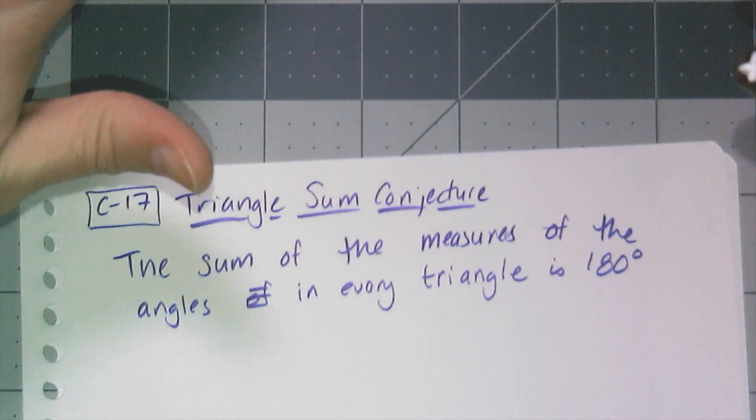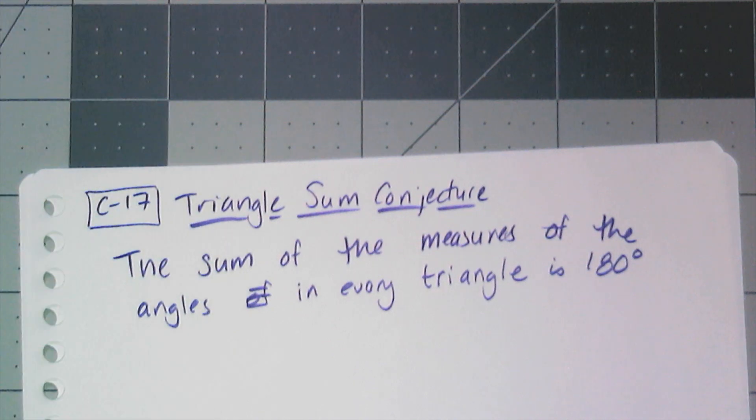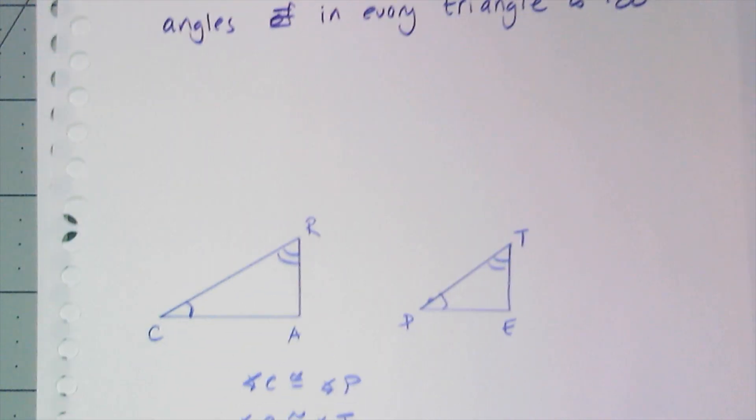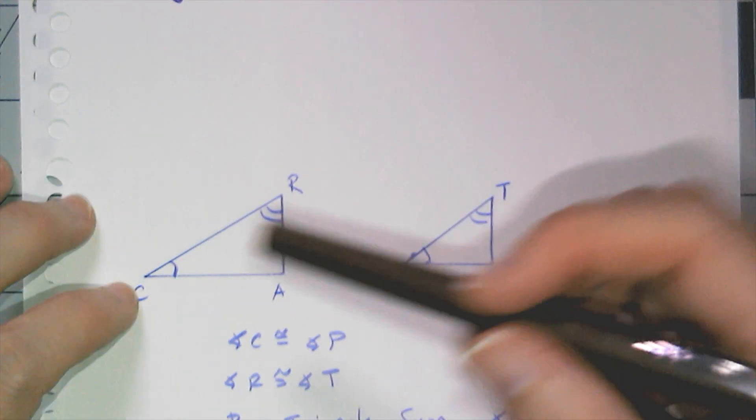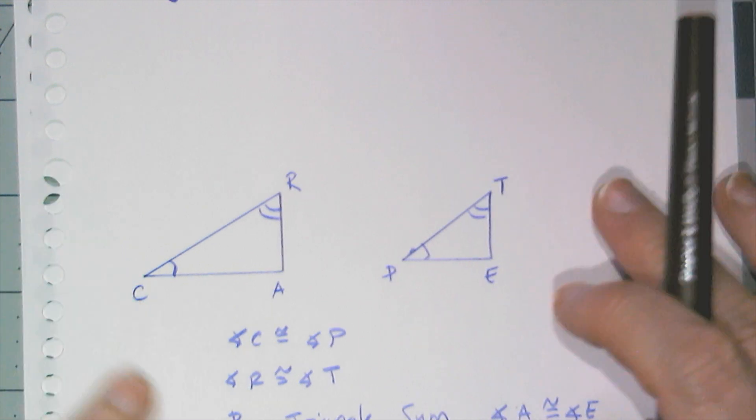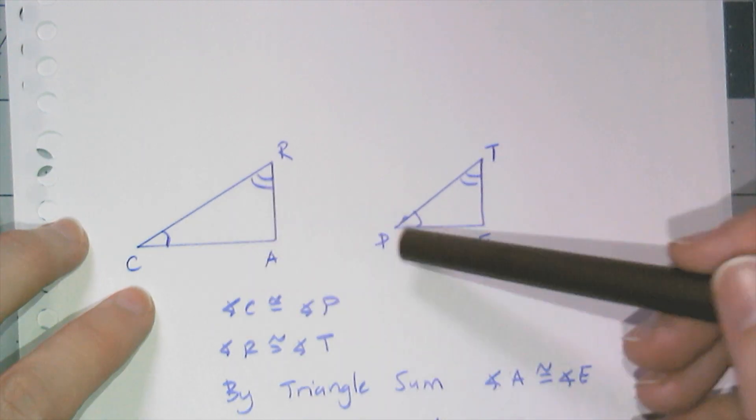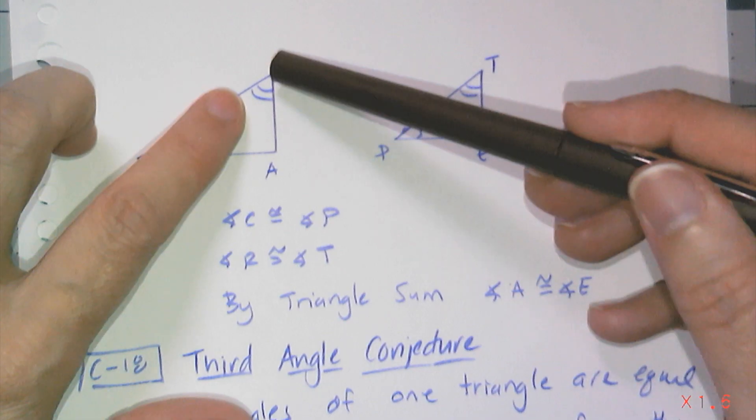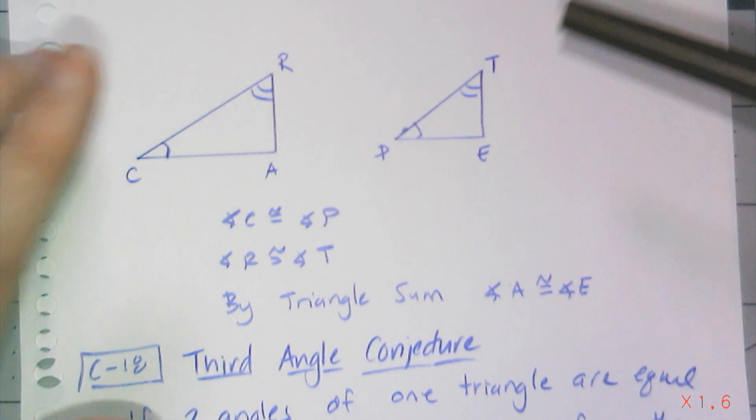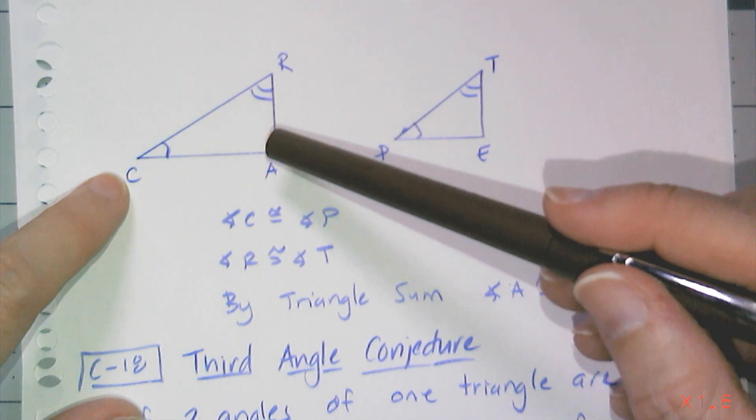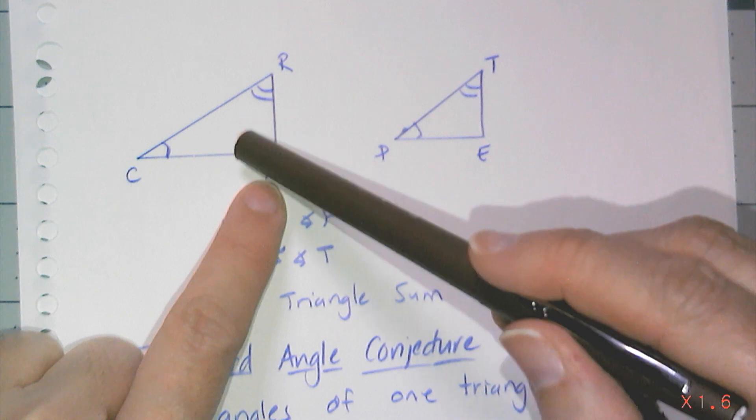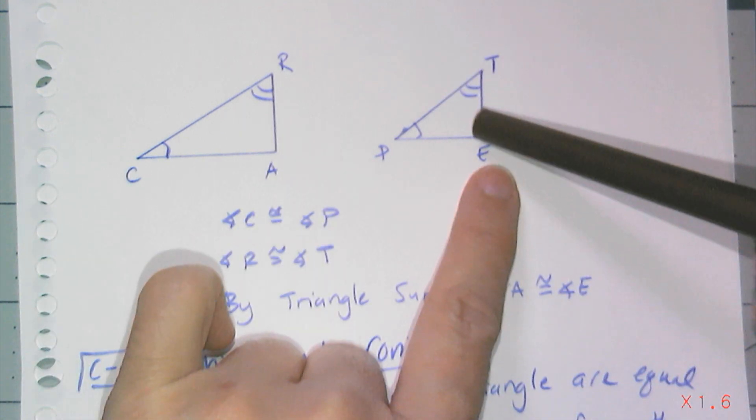And so if I have two triangles, C, A, R, and P, E, T, and I tell you that angle C is congruent to angle P, and angle R is congruent to angle T, then triangle sum is going to get me angle A congruent to angle E. And that makes sense, right?